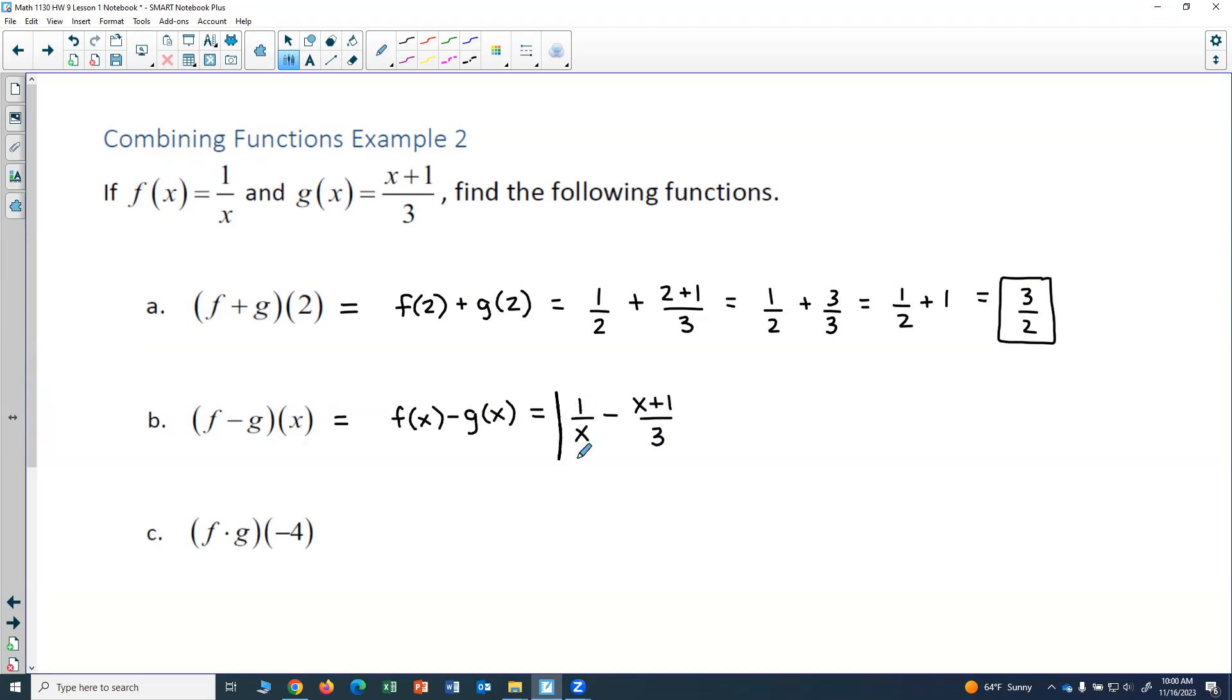Now this is a valid answer. You could stop there. If you wanted to find a common denominator and combine them into a single fraction, that can sometimes be helpful. So in order to do that, what I would do is I would multiply the first fraction by the denominator of the second fraction, and I would have to multiply both the top and the bottom. So I could rewrite this as 3 over 3x. Notice that if you canceled out the 3s, you would get the original 1 over x.